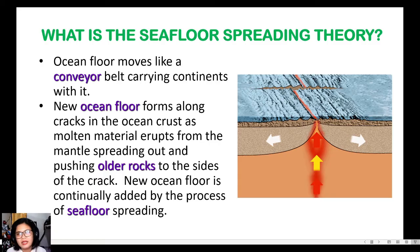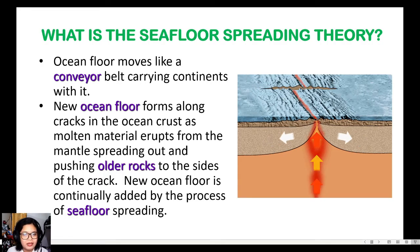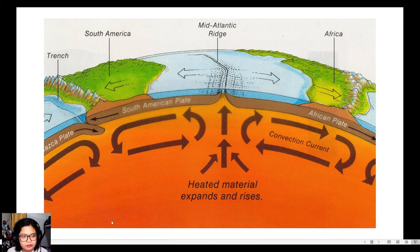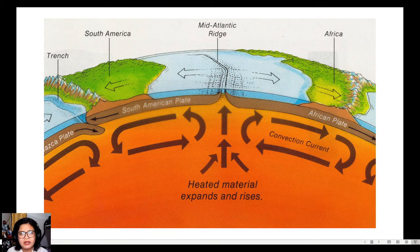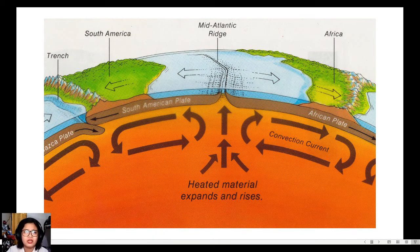The older material that reaches the subduction zones sinks back and becomes part of the mantle again, and the cycle continues. This brings us back to the concept of convection currents discussed earlier. Convection currents happen because of differences in density brought about by differences in temperature in the Earth's mantle. When the seafloor spreads, it pushes nearby plates, and movement in one plate can also cause movement in other parts of the Earth.